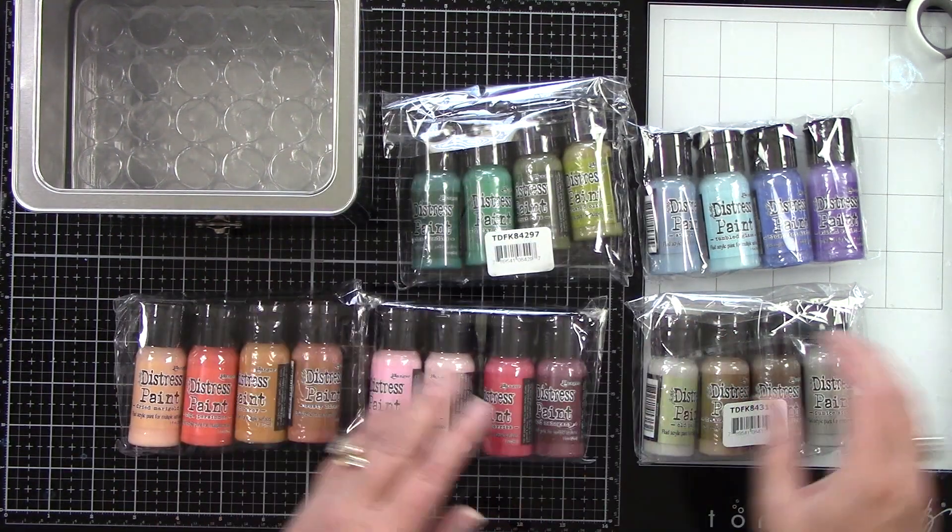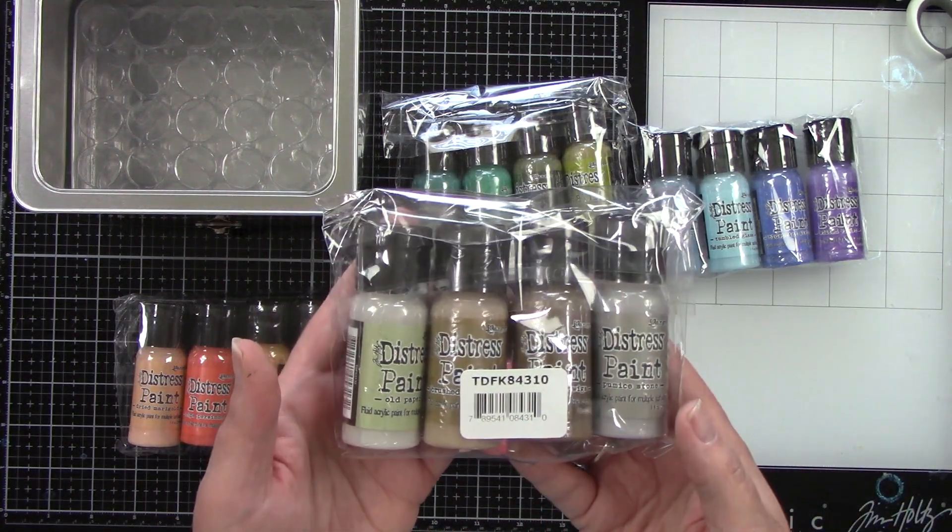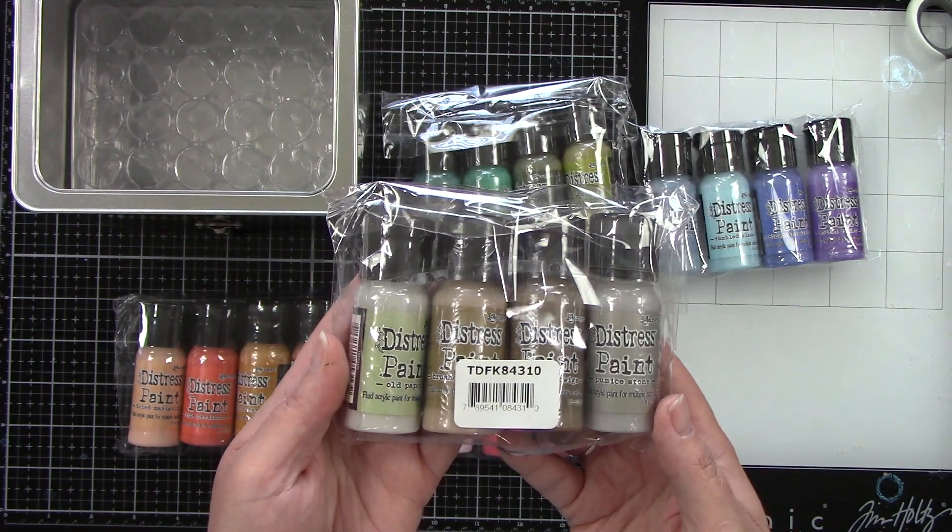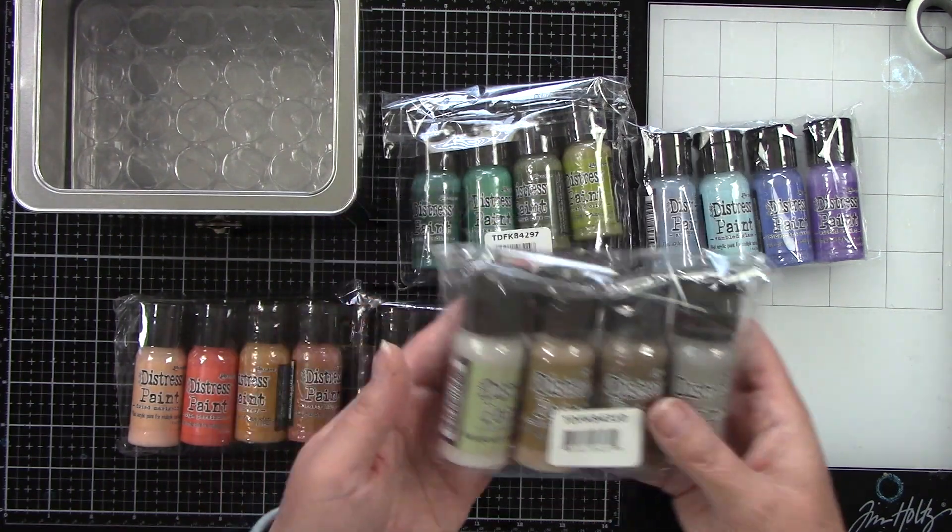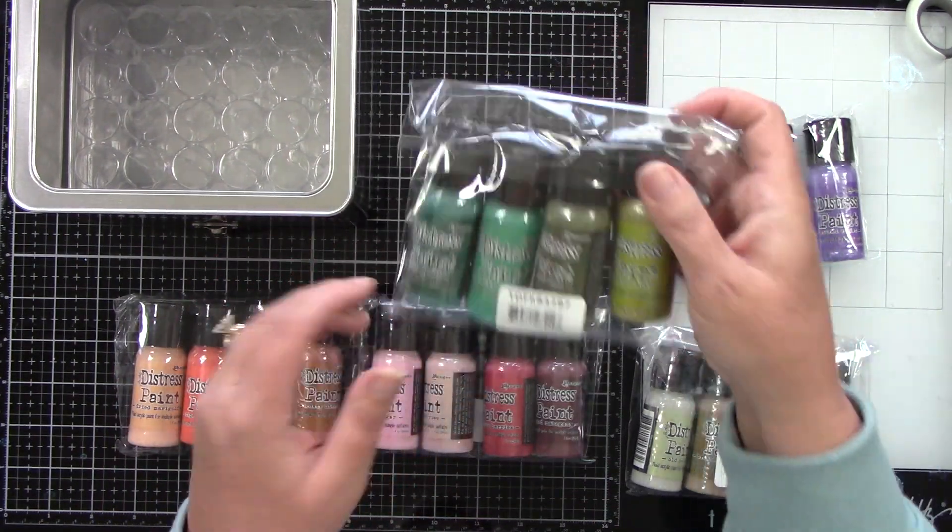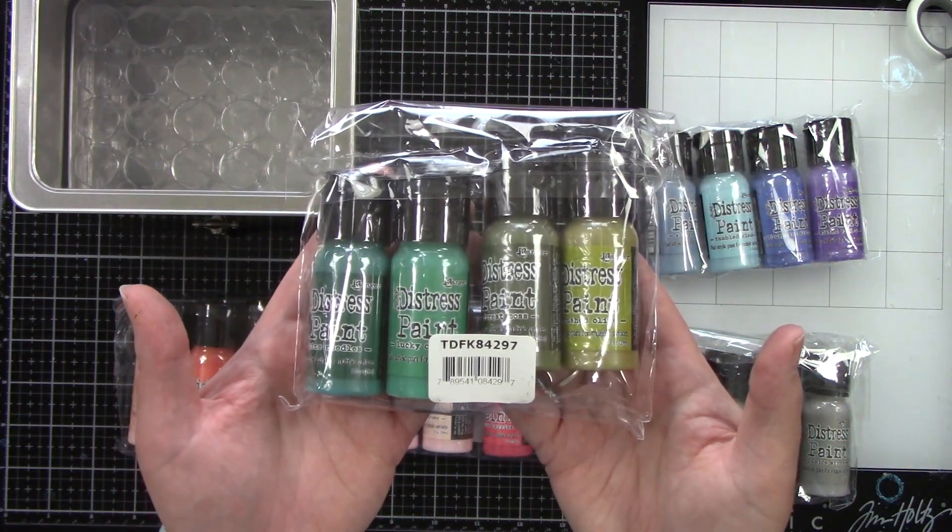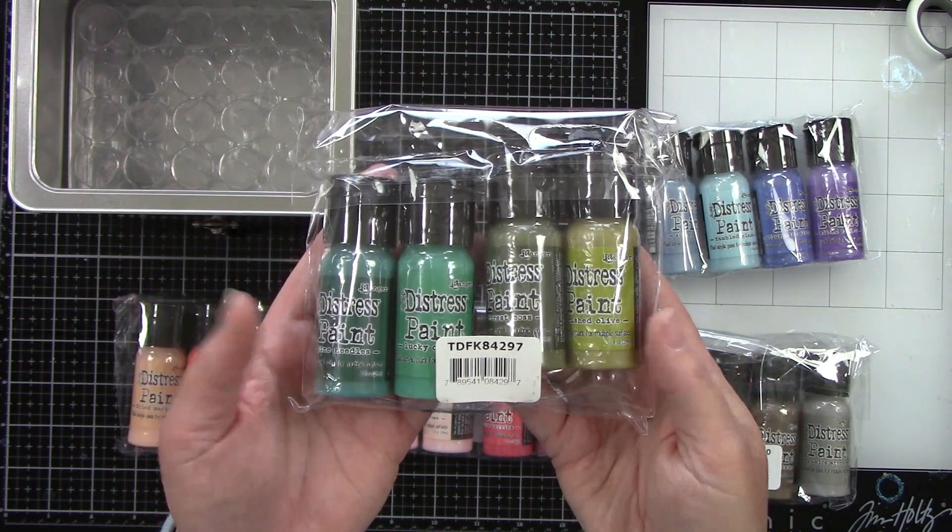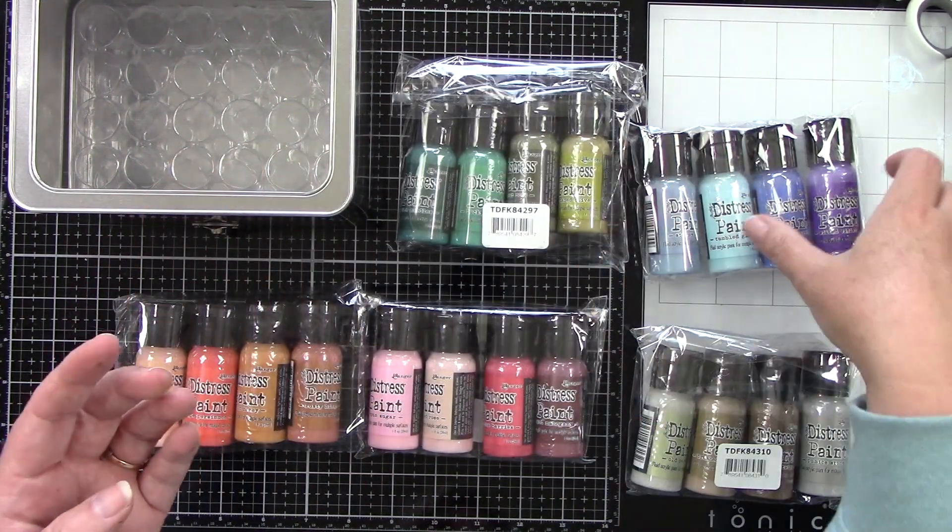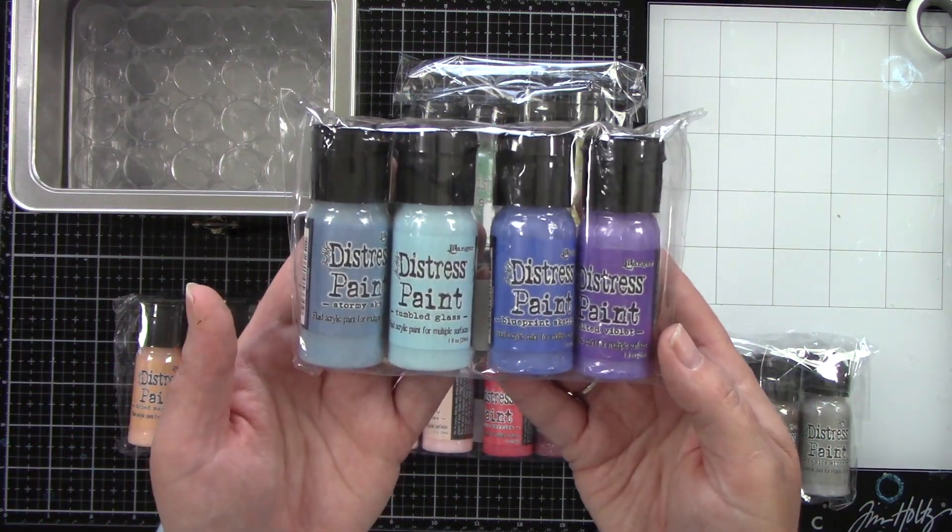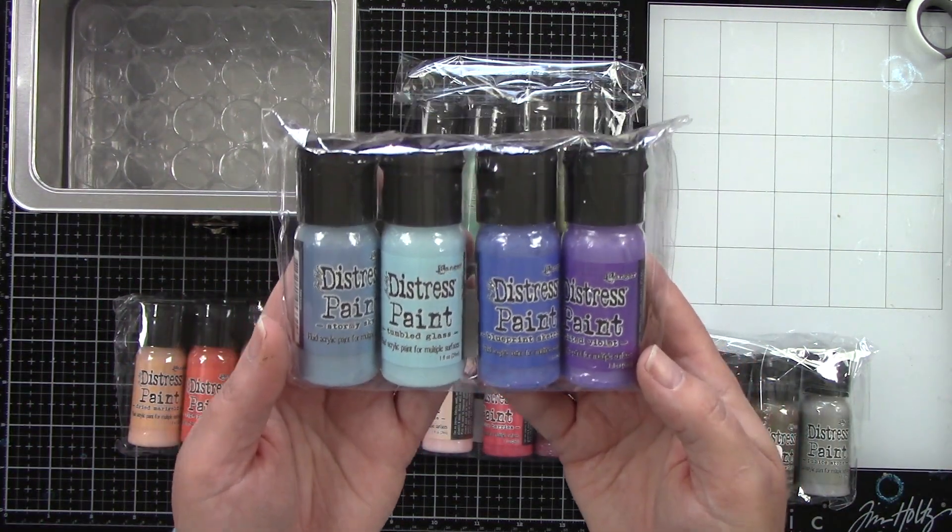Then the other one is old paper, brushed corduroy, gathered twigs, and pumice stone. Then we have a little green collection with pine needles, lucky clover, forest moss, and crushed olive. And then finally for our blues and a little bit of purple, we have stormy sky, tumbled glass, blueprint sketch, and wilted violet.